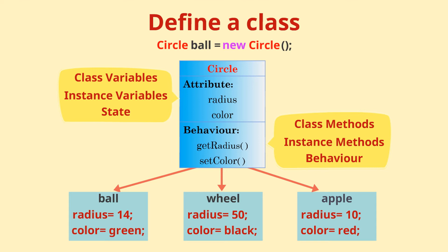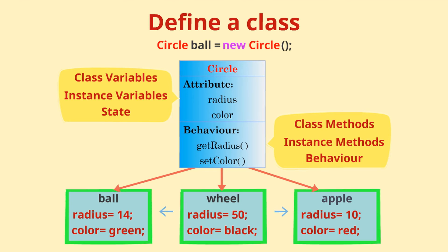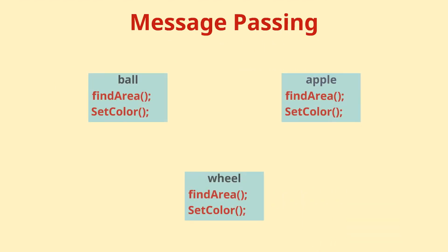Data or instance variables are always internal to the object and other objects cannot access the data directly. Objects interact with each other through methods, which is also sometimes called message passing.